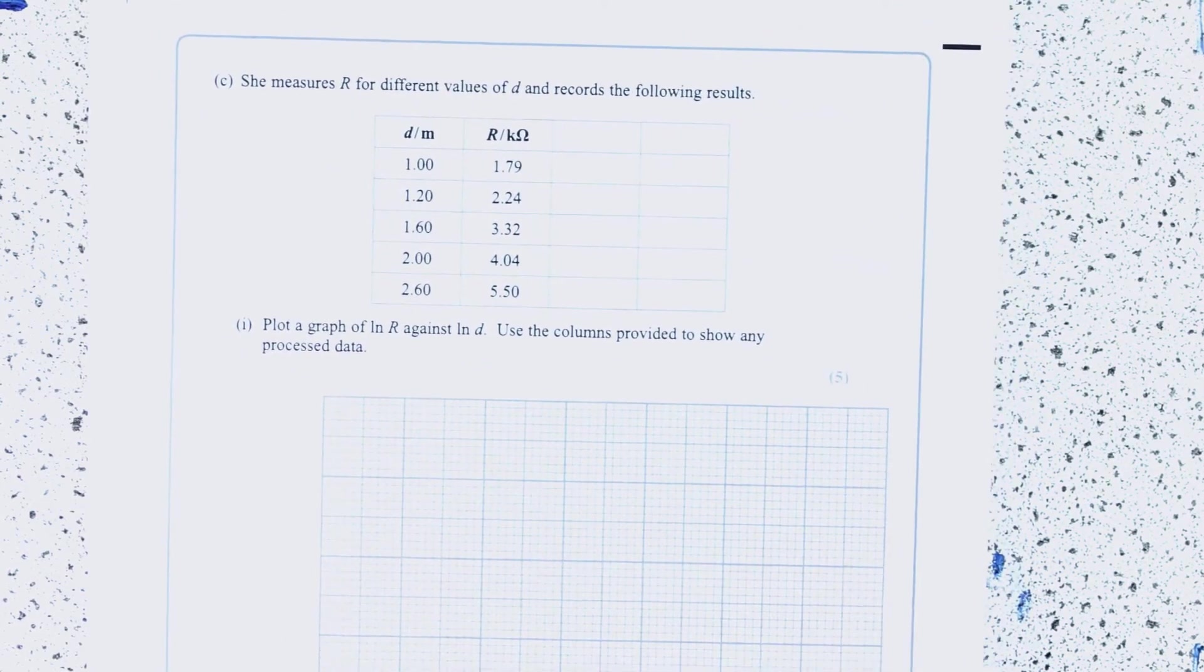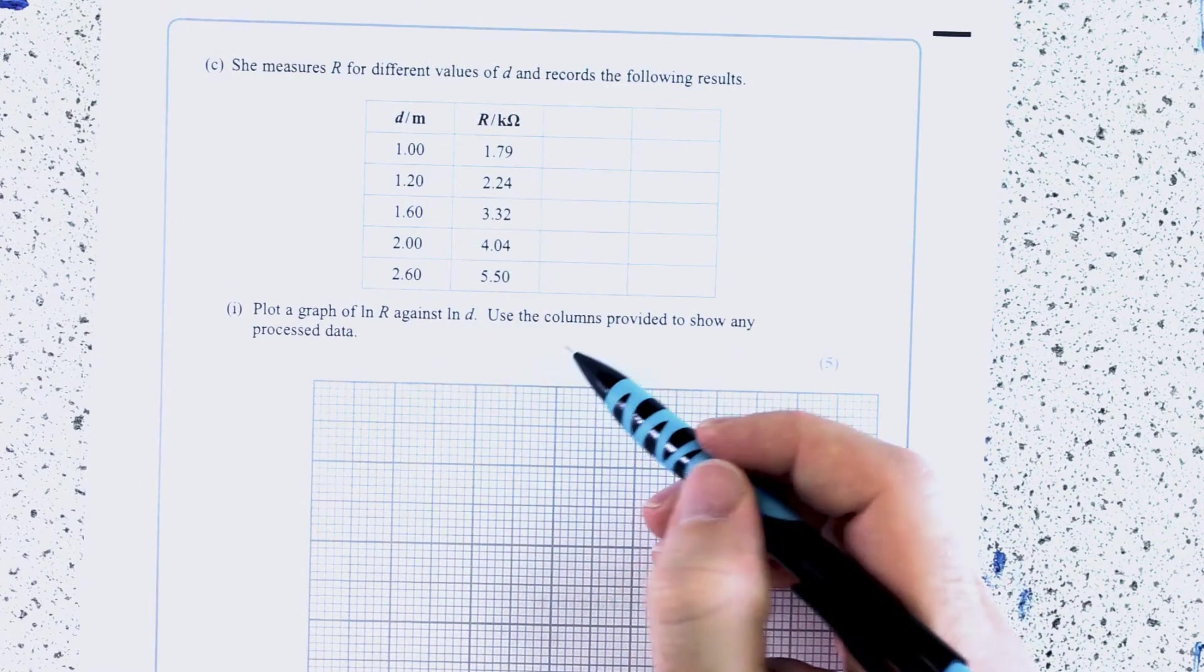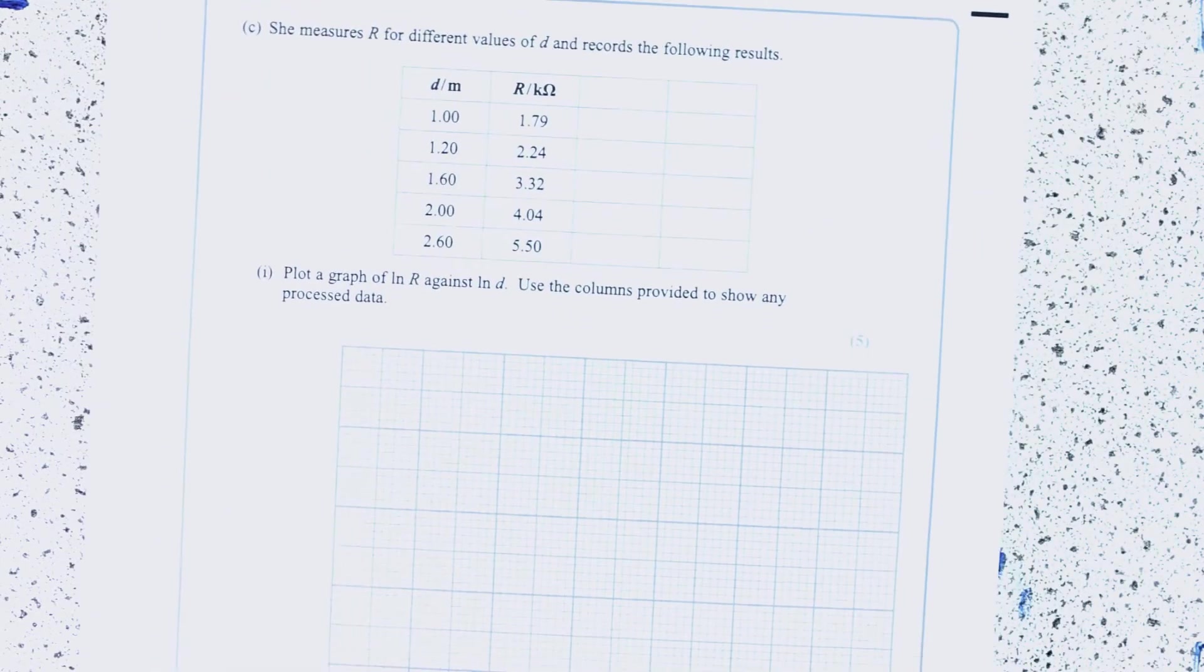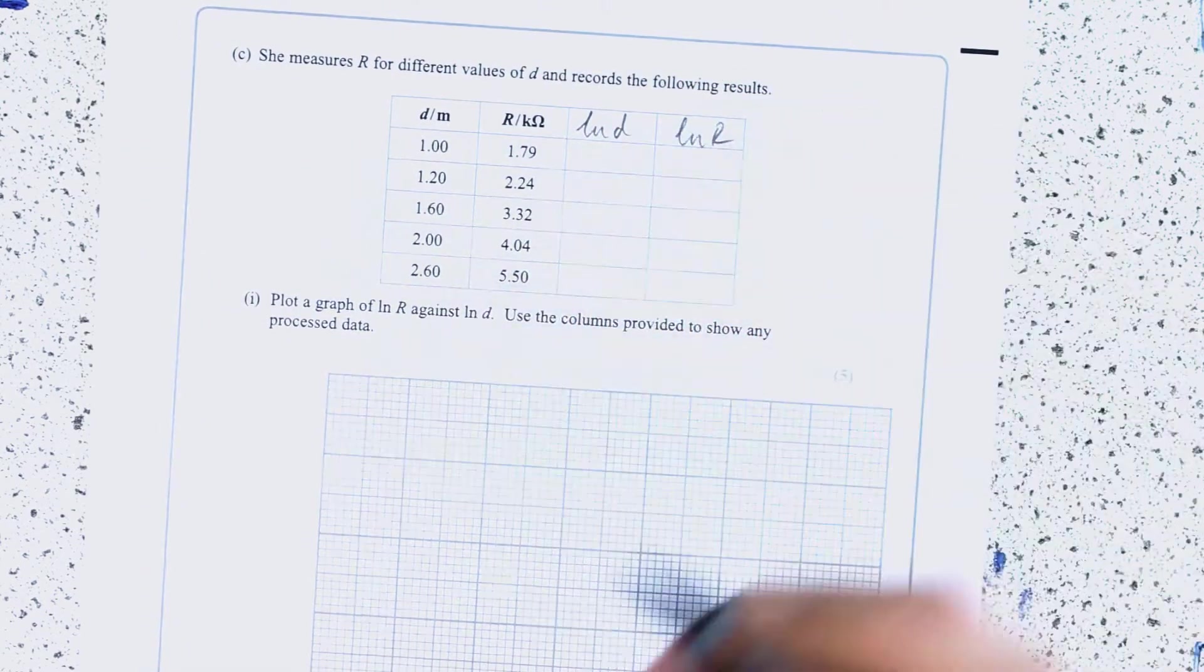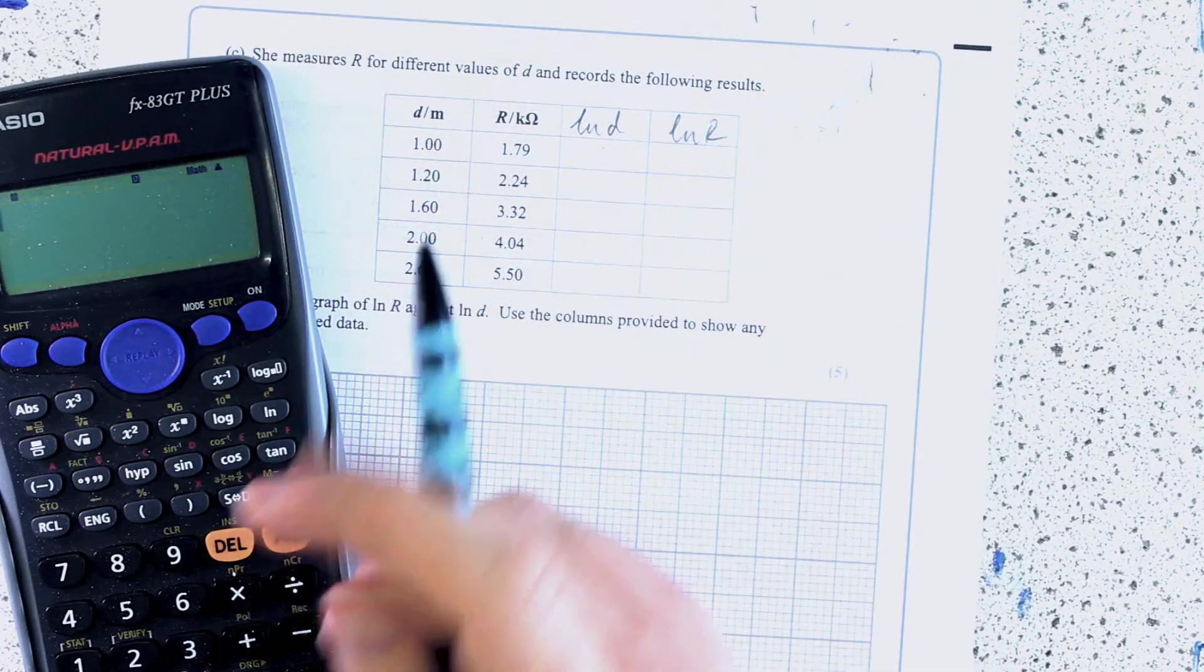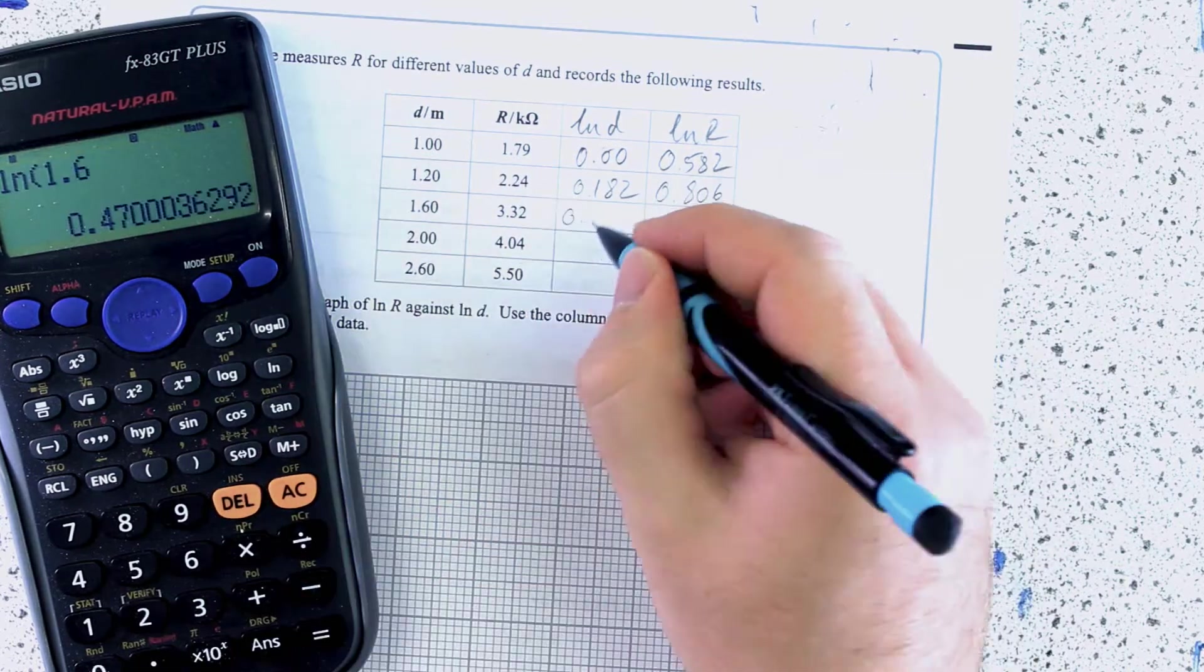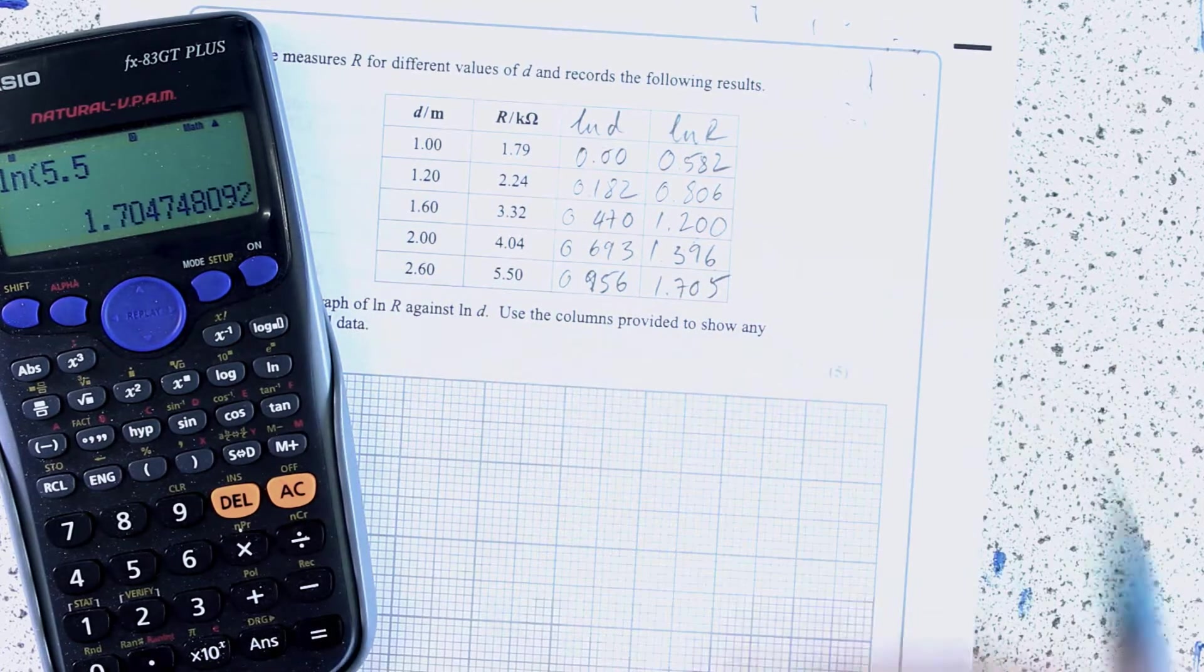The next thing you've got to do is actually go ahead and plot that graph. So before you do that, you've got to get yourself Lun-R and you've got to get yourself Lun-D. So which one am I going to put on the X axis, Lun-D? So I'll do that first. So you've been given data to three sig figs. So you should really give your answers to three sig figs as well.